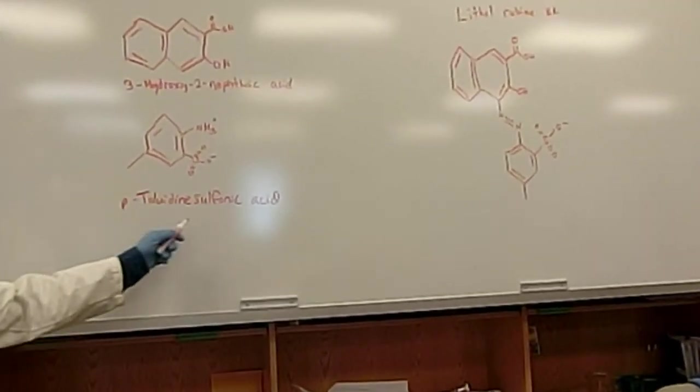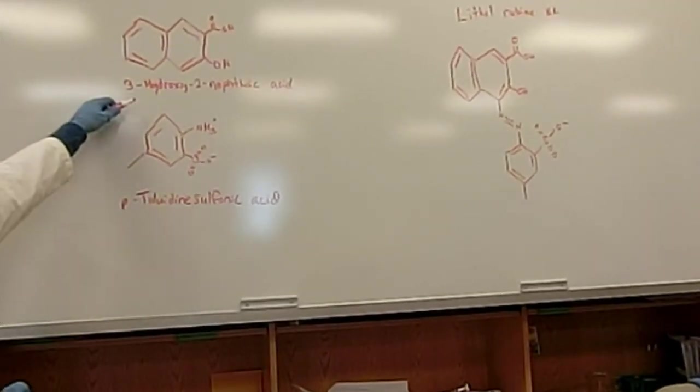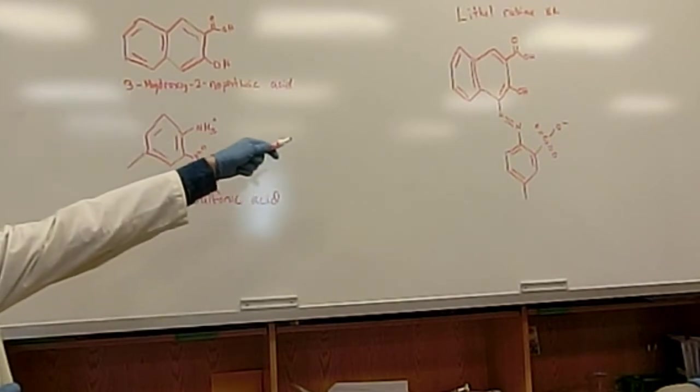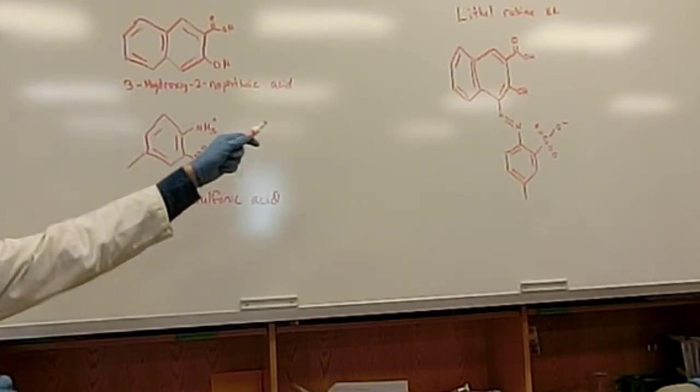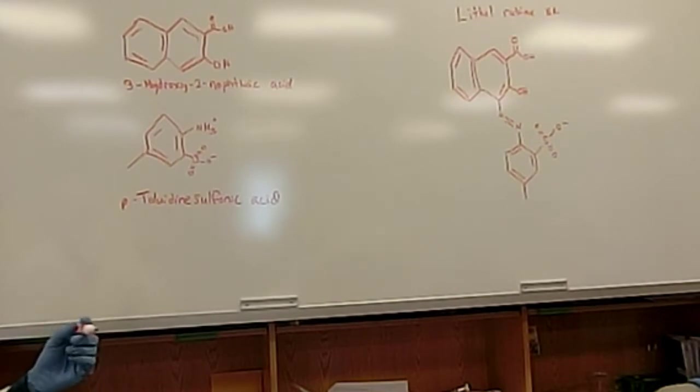We're going to start off with toluene sulfonic acid and 3-hydroxy-2-naphthoic acid, and we're going to make the Azo Dye Lithol Rubine, a very colorful dye. And we'll do the steps for you in your procedure.